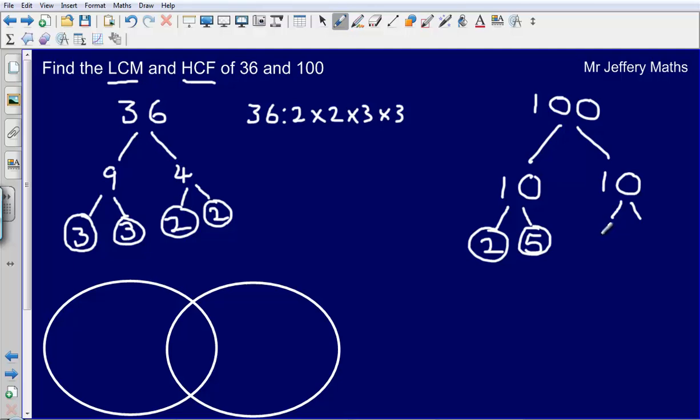Then again 10 is 2 times 5, just the same as the other one. So as a product of prime factors I could say that 100 is 2 times 2 times 5 times 5. Remember that you can check your answer here by multiplying these combinations together and it should give you your original number.